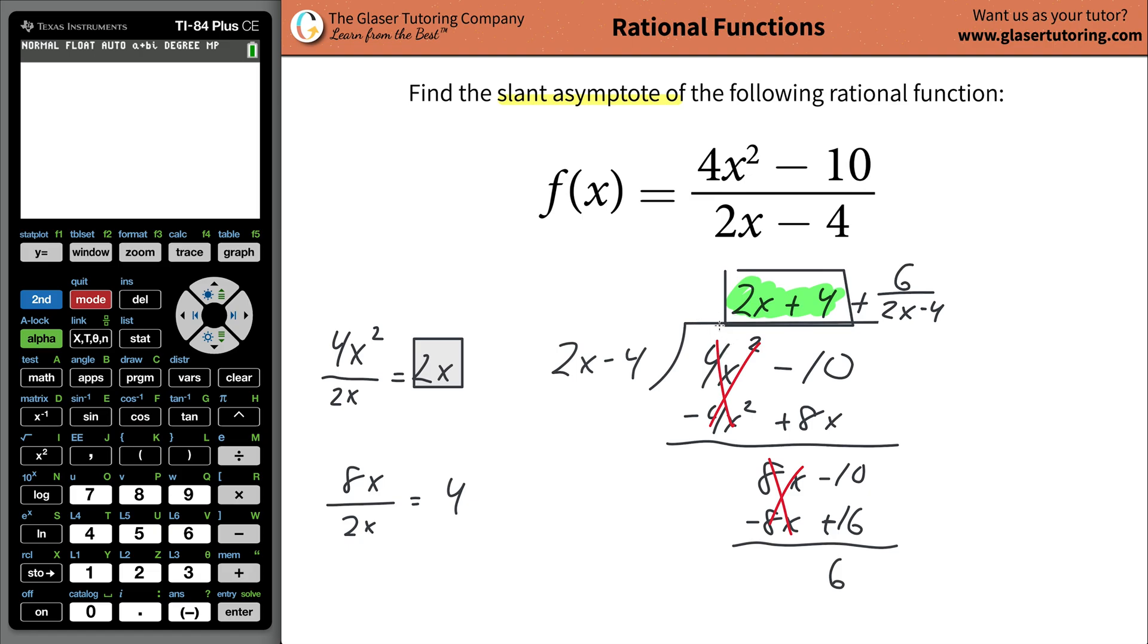That's the slant asymptote, but that's all there is to it. You're just going to disregard that remainder. Now if you want to see this in action, take out your calculator.